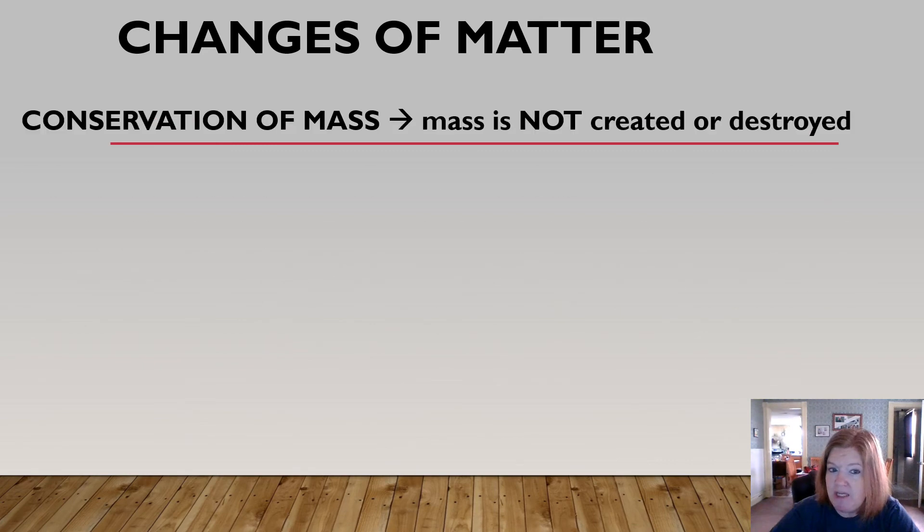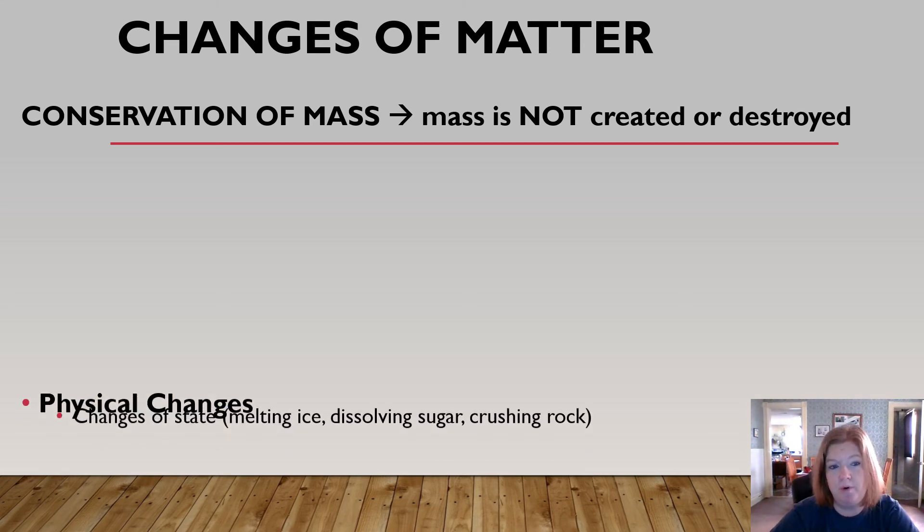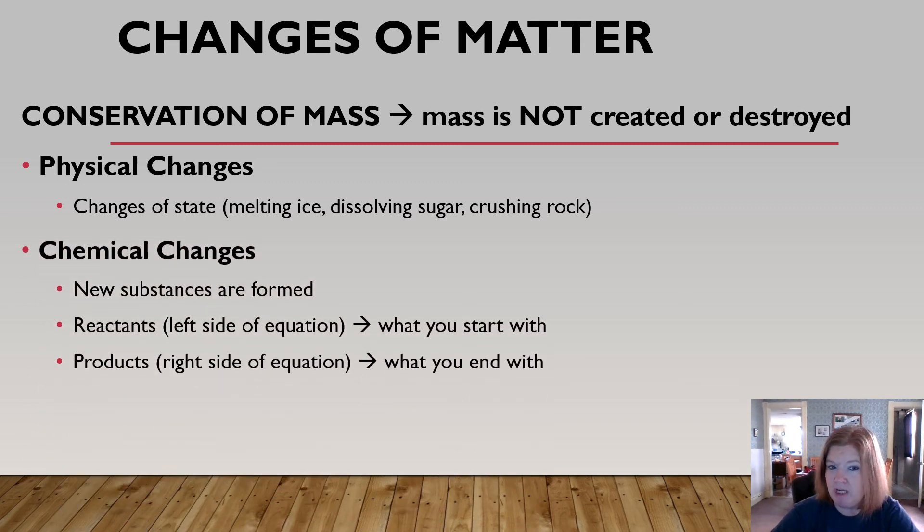What about some changes in matter? Well, important rule to remember: conservation of mass. Mass cannot be created or destroyed. It can only change form. So in physical changes, those include things like changing state. So we can melt ice, dissolve sugar, crush rock, take a piece of paper, rip it into a bunch of pieces. Chemical changes, we get new substances formed. So the reactants are on the left side of the equation, what you start with. The products are going to be on the right side, and it's what you end with.